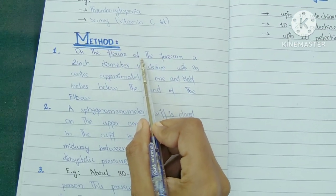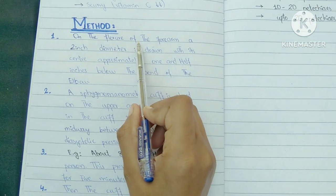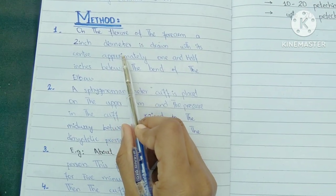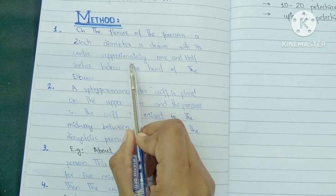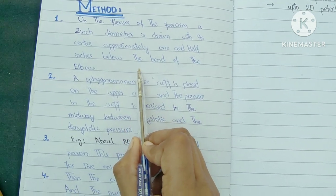If we talk about the procedure and method, first, a circle of two inch diameter is drawn on the flexor surface of the forearm with its center approximately one and half inch below the bend of the elbow.